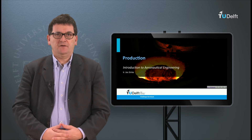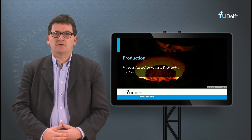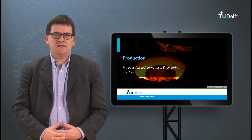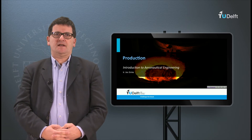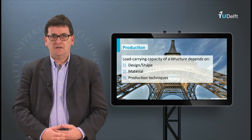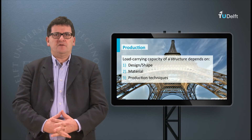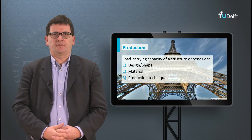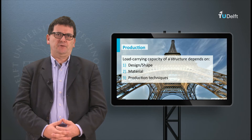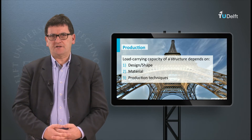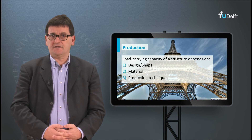In this lecture about materials I will focus on the production of components. You will see that there is a big interaction between material properties on one hand and the production options on the other hand. The performance of a product depends highly on its design, the selected production method and the material used. There are interrelationships between these three entities.